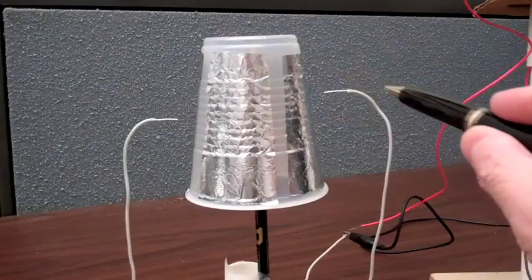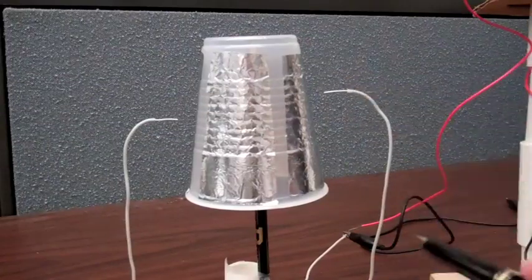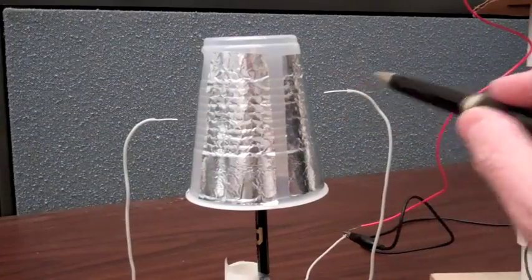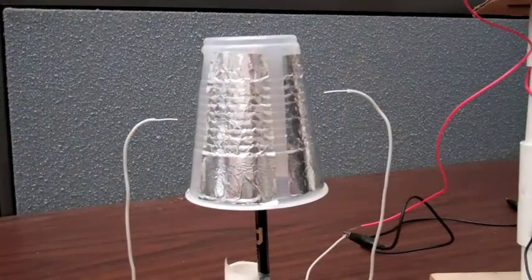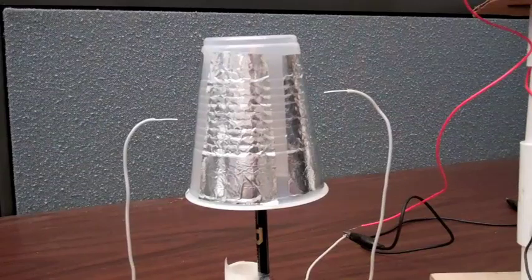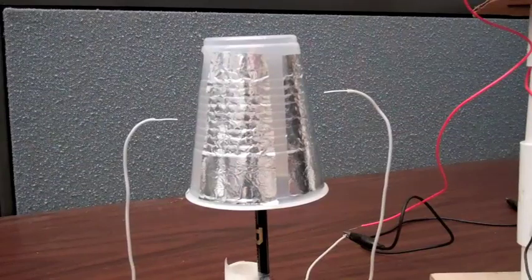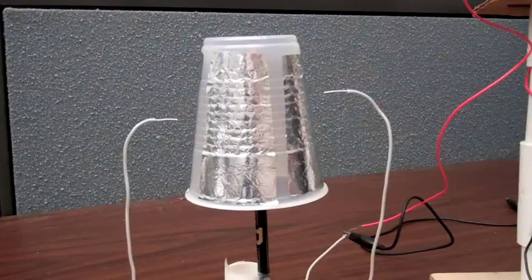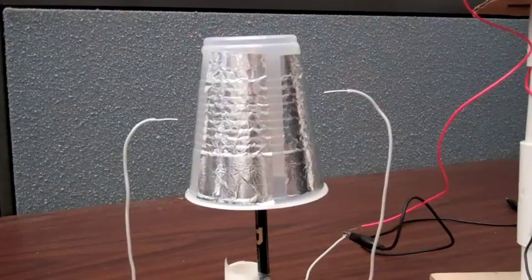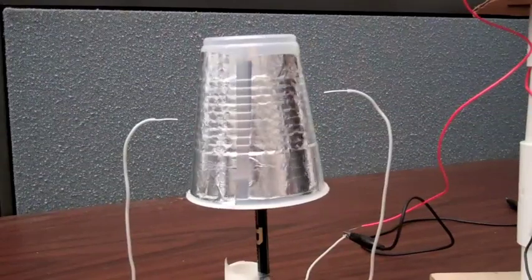I've connected the wire on the right to the Van de Graaff generator so it will charge up to about 10,000 volts, and the wire on the left is connected to ground. So I'm going to now turn on the Van de Graaff generator and you'll hear the little electric motor, and the cup should start to rotate.